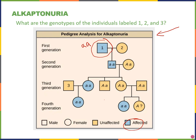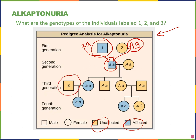Person two is unaffected, so as a female with a recessive disorder she must have at least one big A. Looking at their child, I know the child inherits one allele from each parent. The child got a small a from dad, and must have received a small a from mom as well. So she must be heterozygous — big A, small a. For person three, an unaffected male, I look at their child. Their daughter is affected, so she received a small a from mom and the other small a must have come from dad. So he is also a carrier — big A, small a.